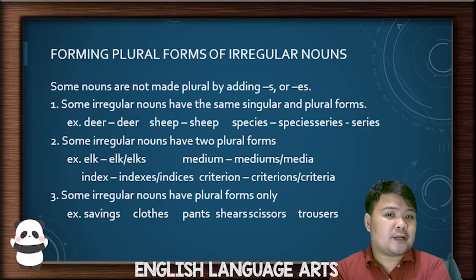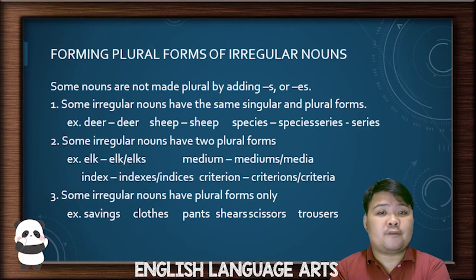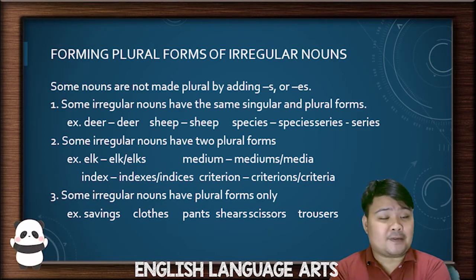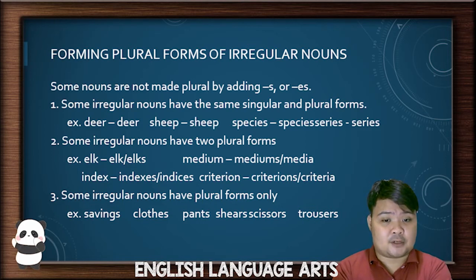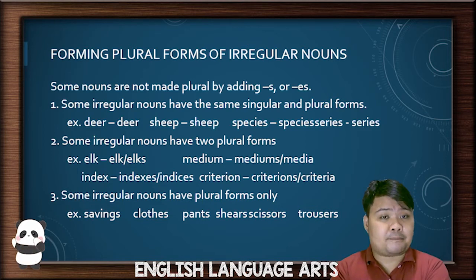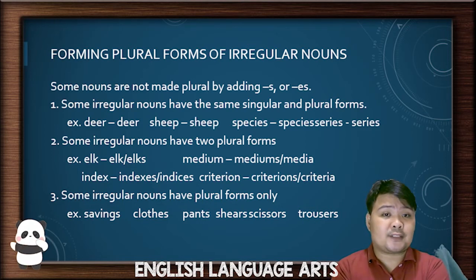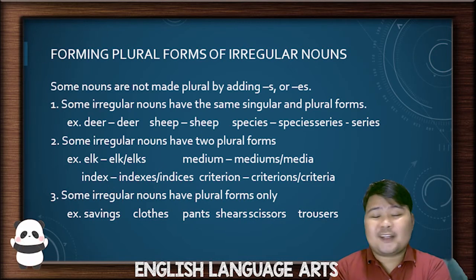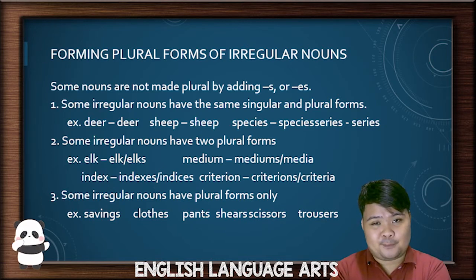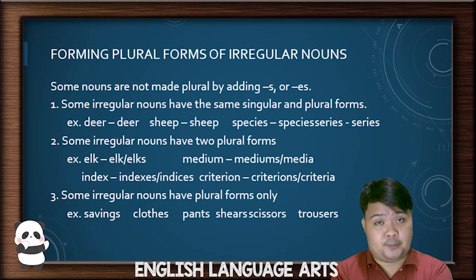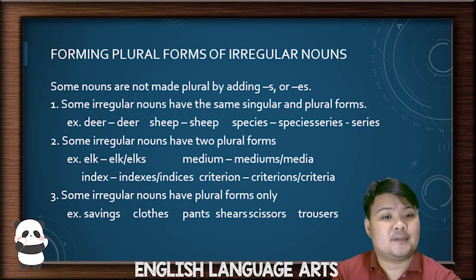Some irregular nouns only have plural forms — there is no singular form. For example: savings, clothes, pants, shears, scissors, and trousers. There is no singular form — all of them are always just plural.